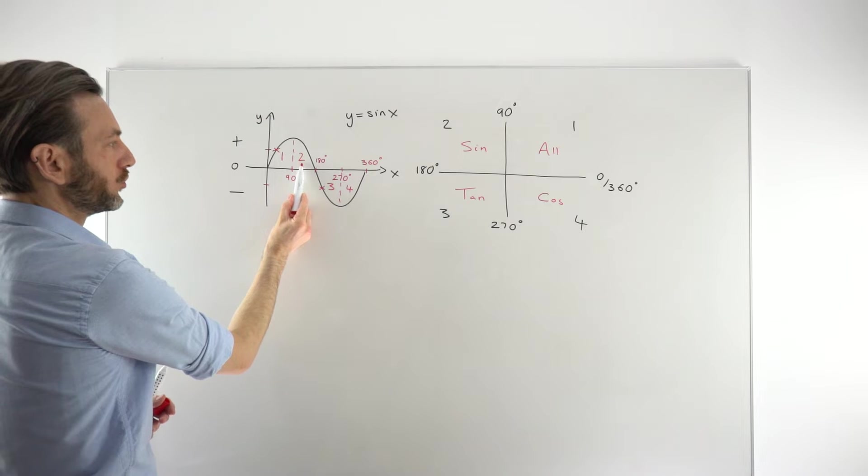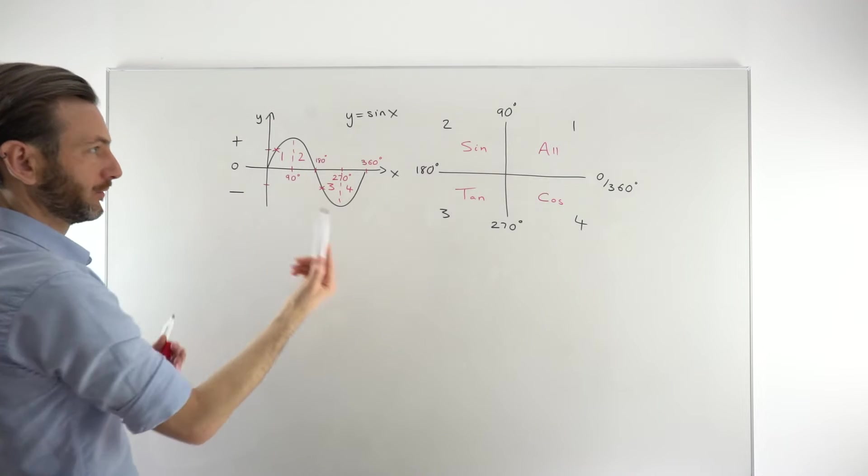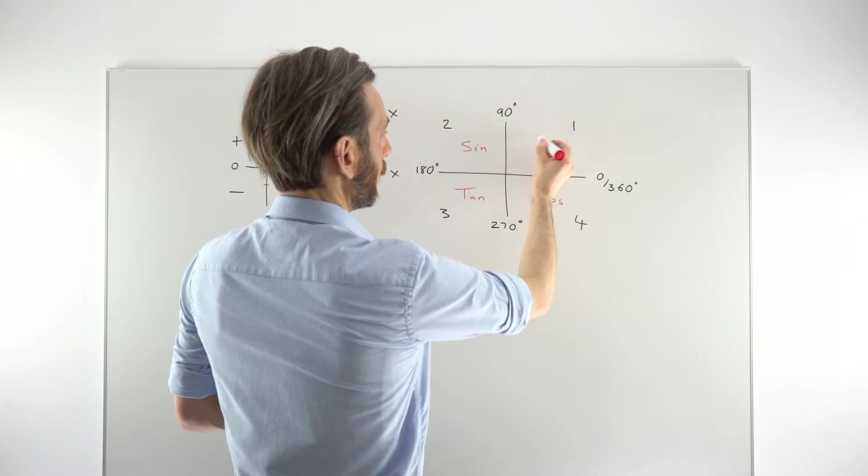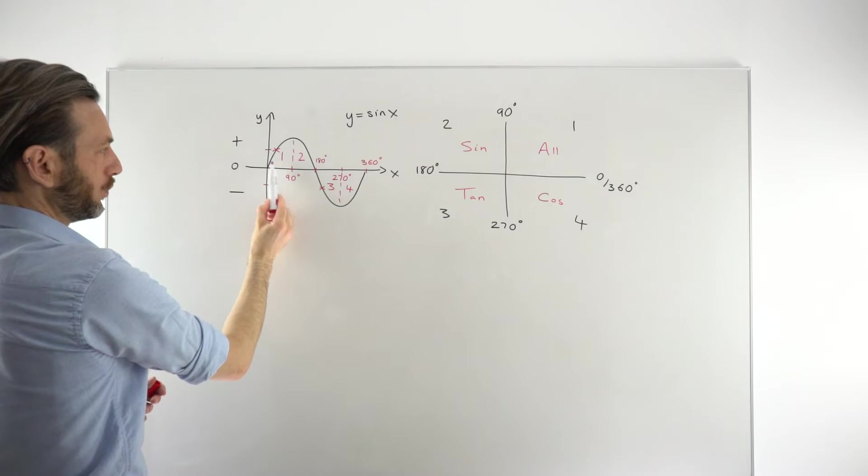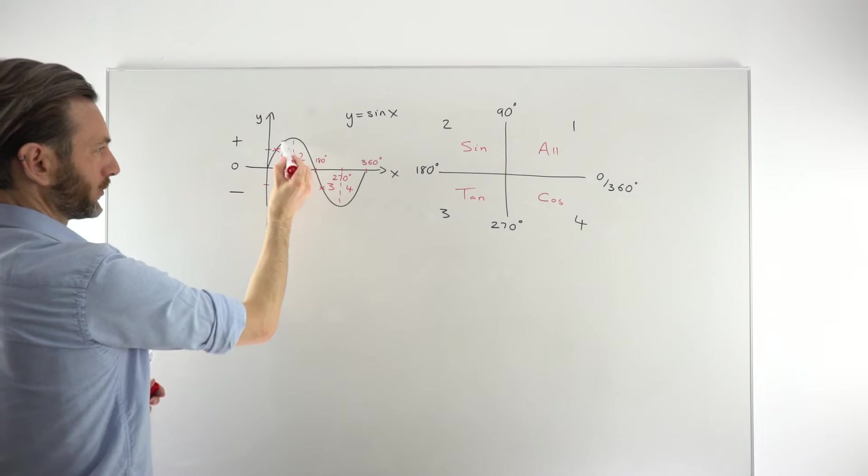Well, we know that from quadrant 2, from the sine graph, it is positive. Quadrant 1 says that all three functions are positive in quadrant 1. And here, in quadrant 1, the sine graph was positive.